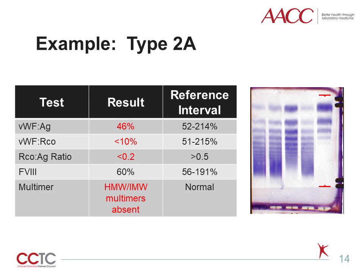With normal von Willebrand factor function, the protein amount and activity would be similar. Accurate subtyping of von Willebrand disease is important since the subtype directs treatment choice. Treatment can include desmopressin, or DDAVP, which releases endothelial von Willebrand factor stores, von Willebrand factor replacement with plasma-derived or recombinant concentrates, von Willebrand factor-containing blood products, and hormonal therapies to increase von Willebrand factor levels. DDAVP is generally not used to treat type 2, the qualitative subtypes of von Willebrand disease, since releasing stores of abnormal von Willebrand factor is unlikely to be helpful. DDAVP treatment can also worsen thrombocytopenia in type 2B due to acute release of von Willebrand factor with an abnormally high affinity for platelets. When von Willebrand factor replacement is required, specific von Willebrand factor concentrates are preferred over blood products, which are only used when other treatment options are unavailable.